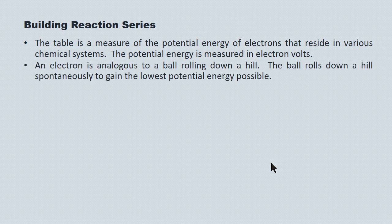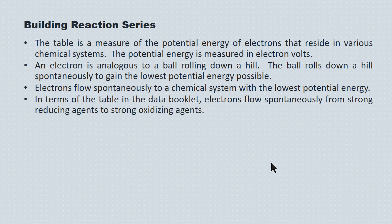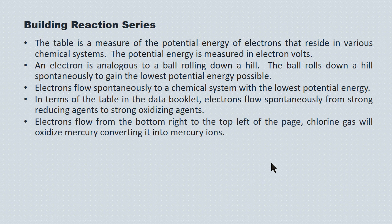An electron is analogous to a ball rolling down a hill. The ball rolls down a hill spontaneously to gain the lowest possible potential energy state available. Electrons do the same thing — they flow spontaneously to a chemical system that provides the lowest possible potential energy state. The universe likes low potential energy systems. In terms of the table, electrons flow spontaneously from strong reducing agents to strong oxidizing agents, from the bottom right of the page to the top left.